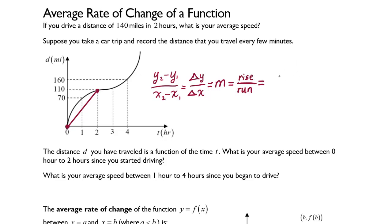We will have a rise of 110 minus 0. That's how far we have shifted vertically. So to find the difference, it's the end value minus the beginning value in the y direction, and then the end value 2 minus the beginning value 0.